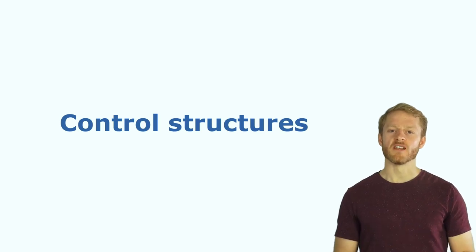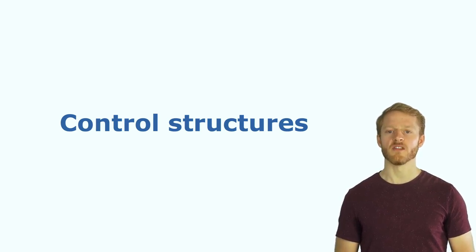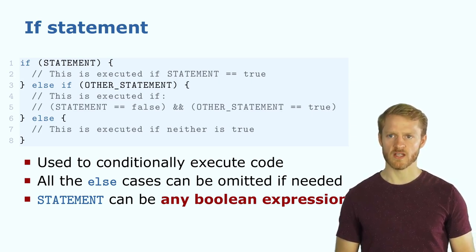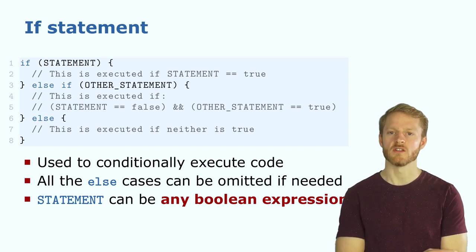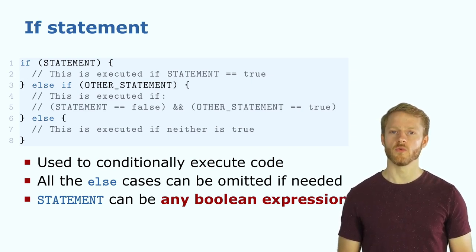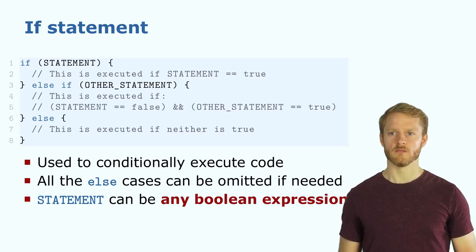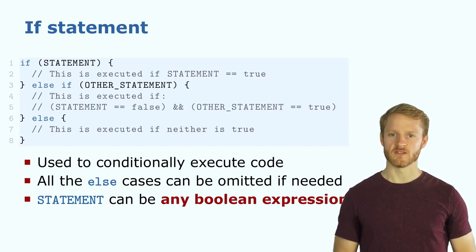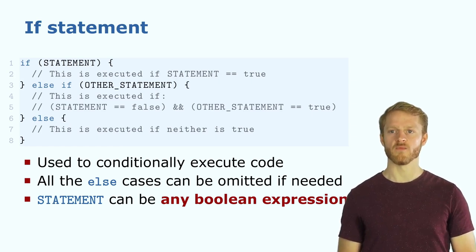Now let's look at the syntax of some control structures, starting with the if statement. This focuses on syntax since we expect you already know how an if statement works — this is the C++ course, not an introductory programming course. When the condition is true, we execute what's in the first scope. Then we have an else clause, which executes something when the other statements were false.